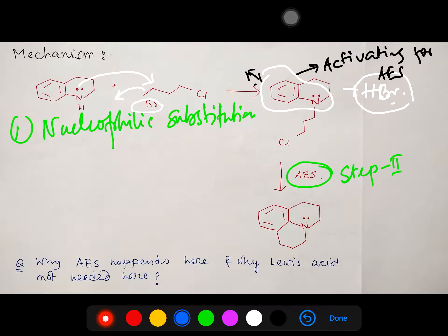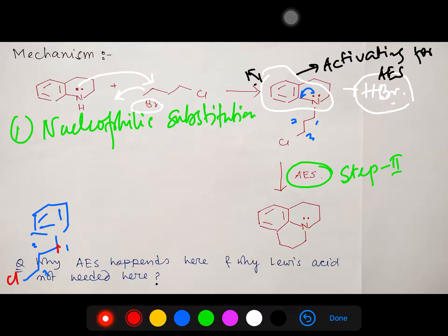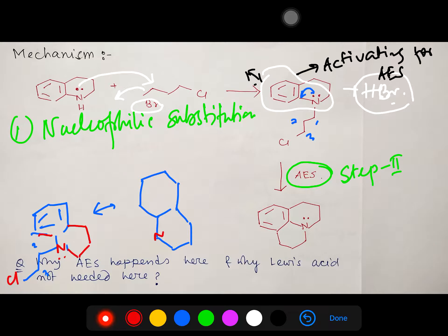Let me draw at least one resonance form for your better understanding. The lone pair can push here, and another resonance form shows — using proper numbering: one, two, three, one, two, three — please follow this numbering strategy carefully as most mistakes come from poor counting. So this nitrogen is electron-donating; it increases the electron density at the ortho and para positions. The nitrogen will carry a positive charge while the electron density in the ring is increased.